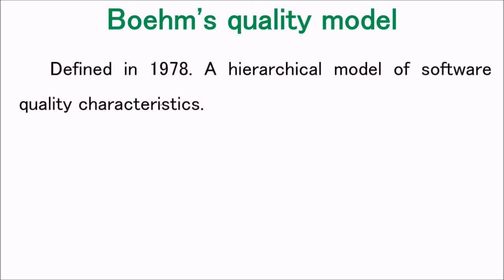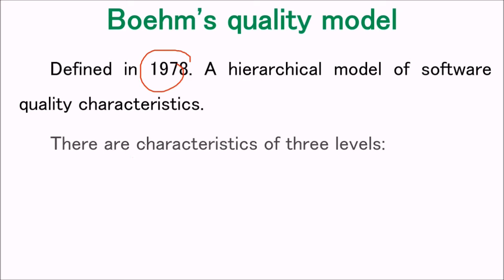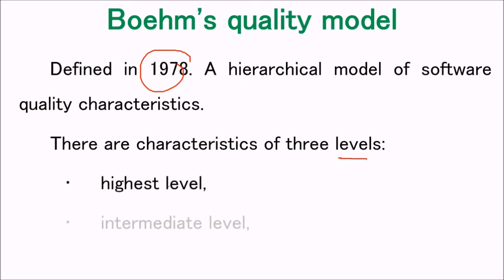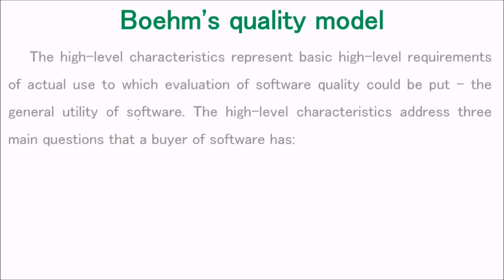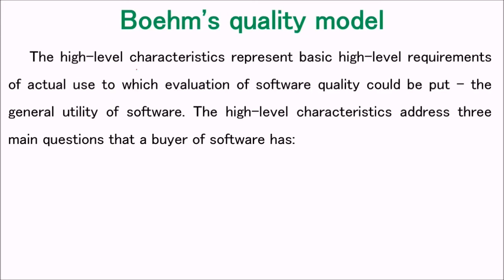Boehm's quality model was defined in 1978 and is a hierarchical model of software quality characteristics with three levels: highest level, intermediate level, and primitive level. The highest level represents the basic high-level requirements for evaluation of software quality — the general utility of the software.